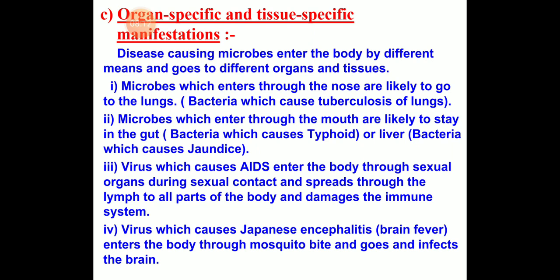The immune system is the protective system of our body which protects us from external microorganisms or the chemicals released by them. Viruses which cause Japanese encephalitis — brain fever — enter the body through a mosquito bite and infect the brain.